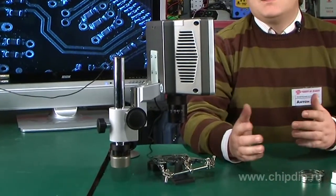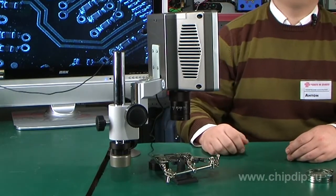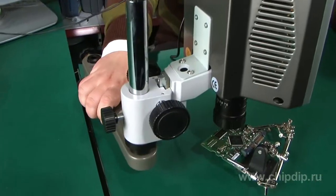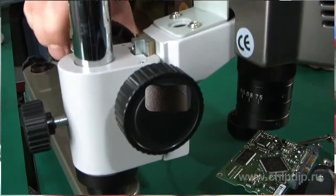The CT2200 USB microscope doesn't have these drawbacks. It uses a video camera as an optical sensor. The image is displayed on the video monitor.